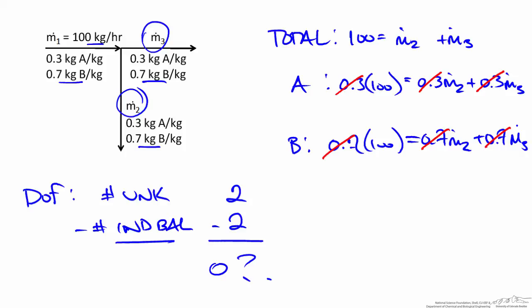So there is only one independent balance that we can write in this particular case. If we modify our degrees of freedom analysis, we have two unknowns minus our one independent balance, which leaves us with one degree of freedom. We do have an underspecified system and we can't calculate M2 or M3 without knowing the other one.